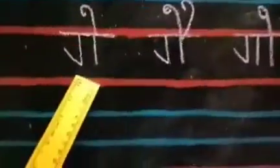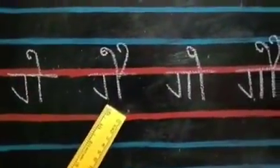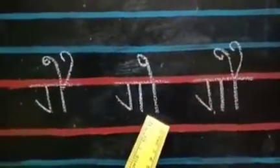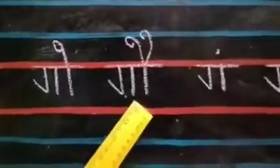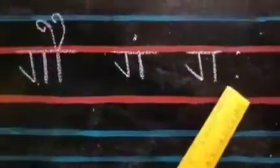Ga plus E equals Gay. Ga plus AI equals Gai. Ga plus O equals Go. Ga plus AU equals Gau. Ga plus ANG equals Gang. Ga plus AHA equals Gaha.